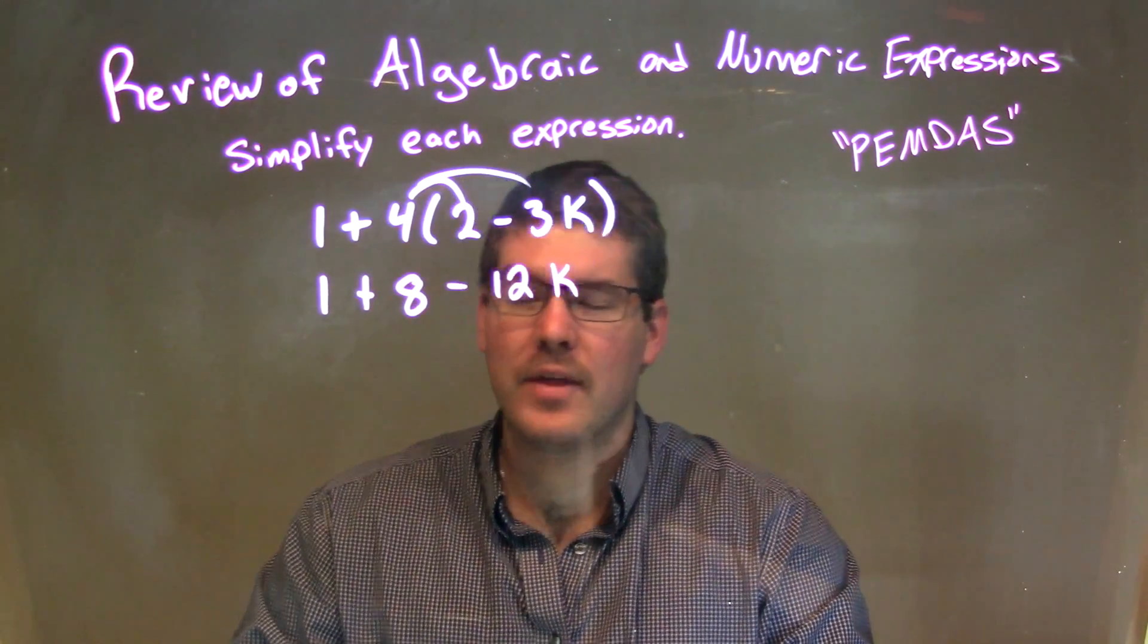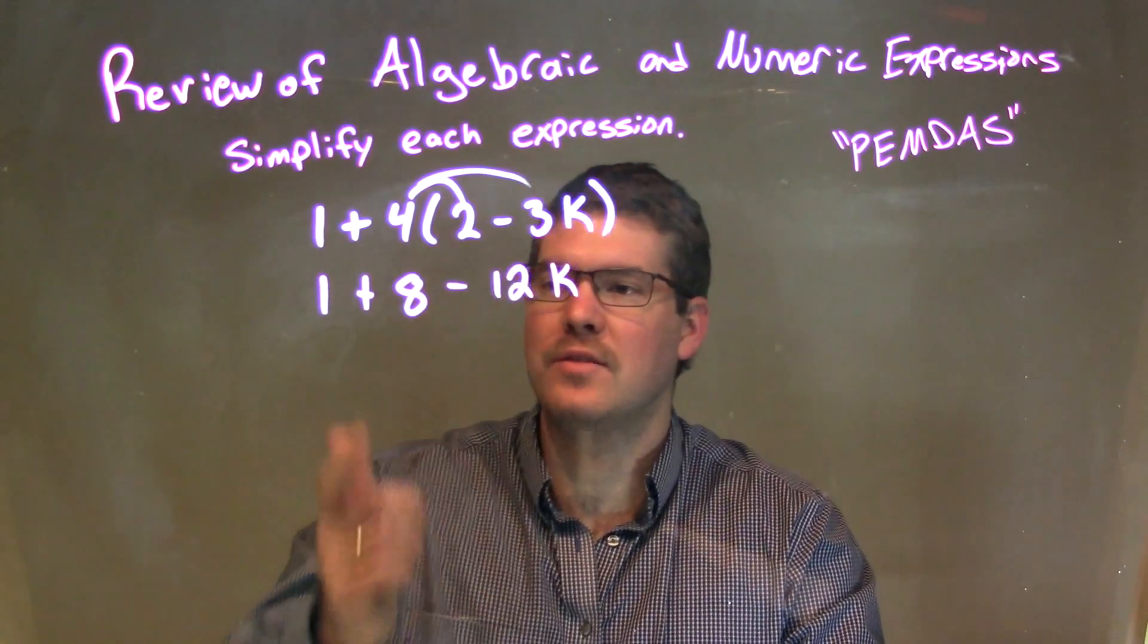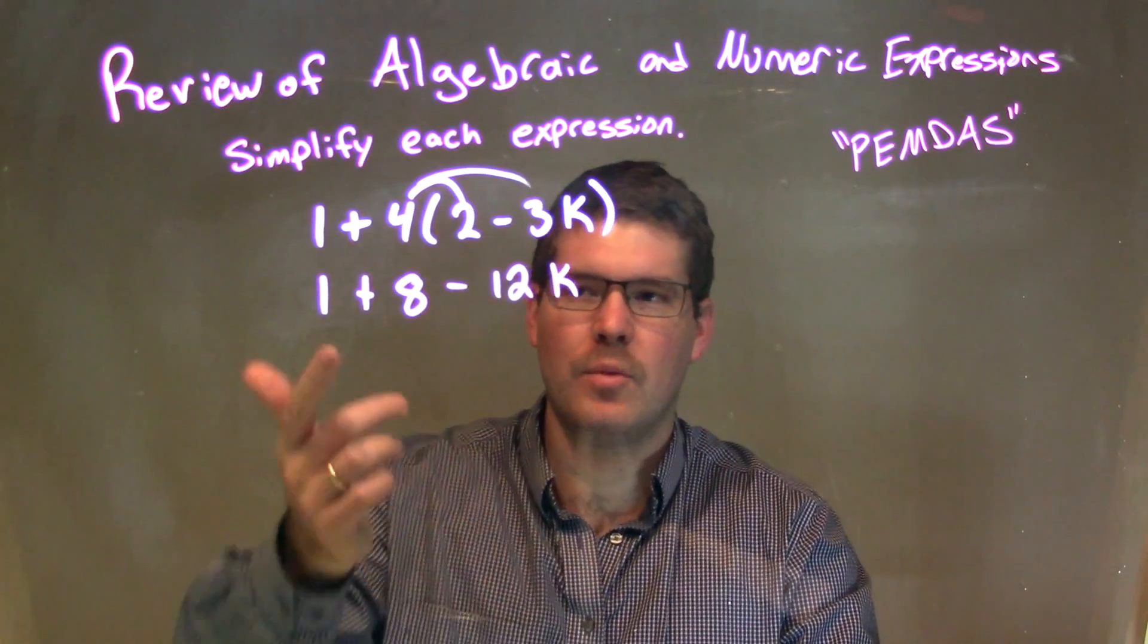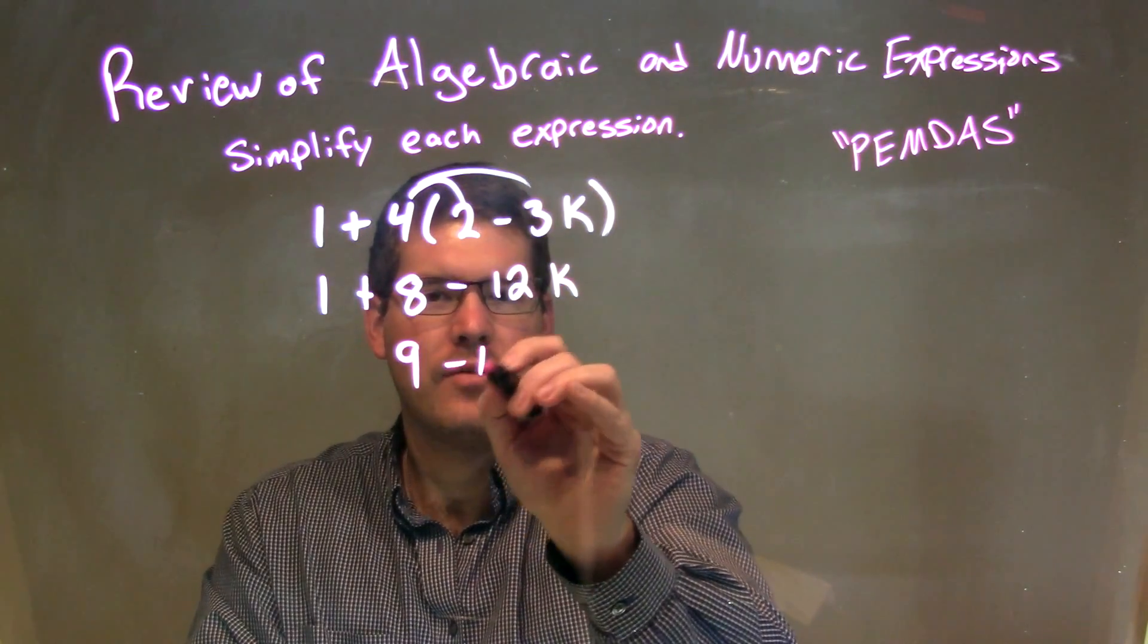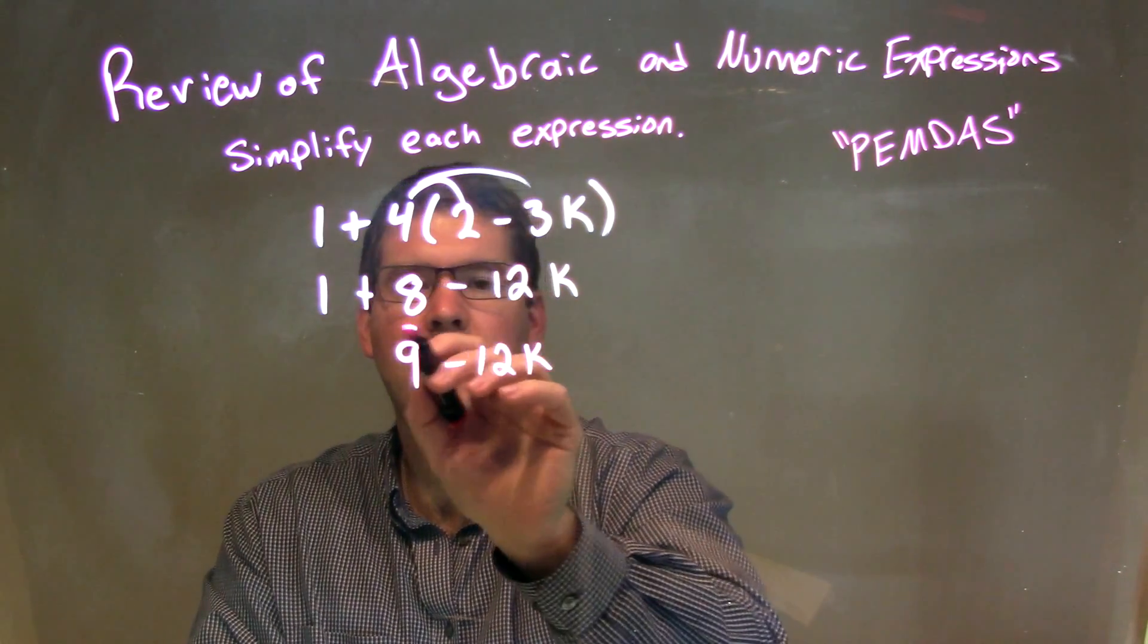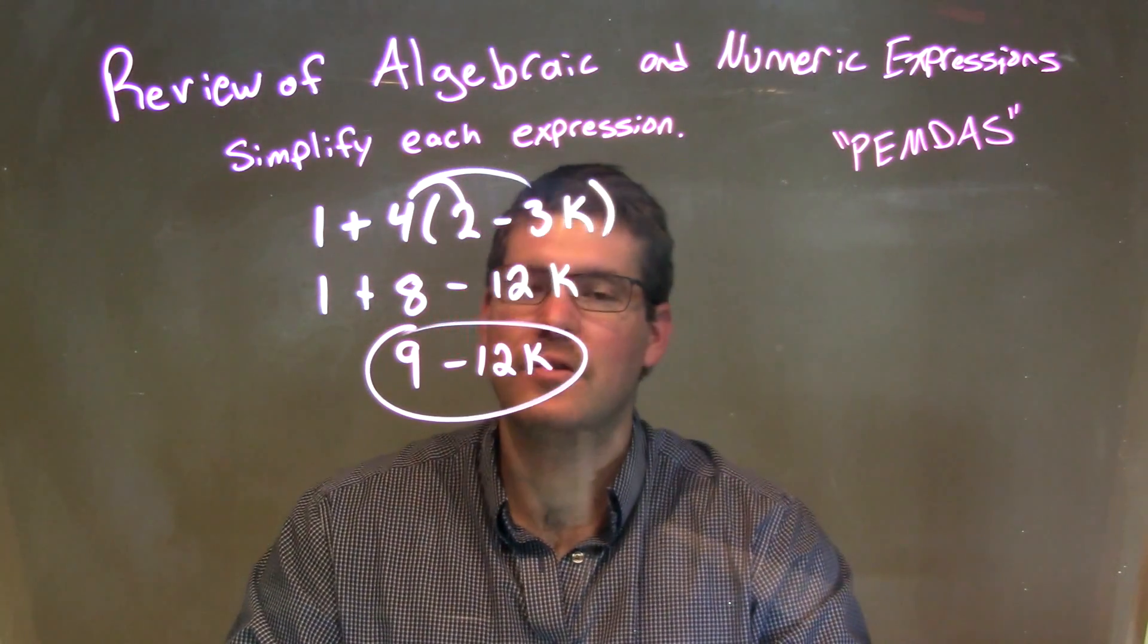So now we have to combine our like terms. The only like terms I see are my numbers, the 1 plus the 8. So 1 plus 8 is a 9. 9 goes down right here. Then we bring down the minus 12k. And there we have it. Our final answer is just 9 minus 12k.